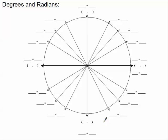Let's first imagine where we are in space here. Here is zero zero, that's the origin. And since the unit circle has a radius of one, this is the point one zero, this is the point zero one, this is the point negative one zero, and this is the point zero negative one. So you can imagine where we are in space.